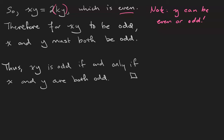Therefore, x times y is odd if and only if — since we've proven both the forward arrow and the backwards arrow — x and y are both odd.